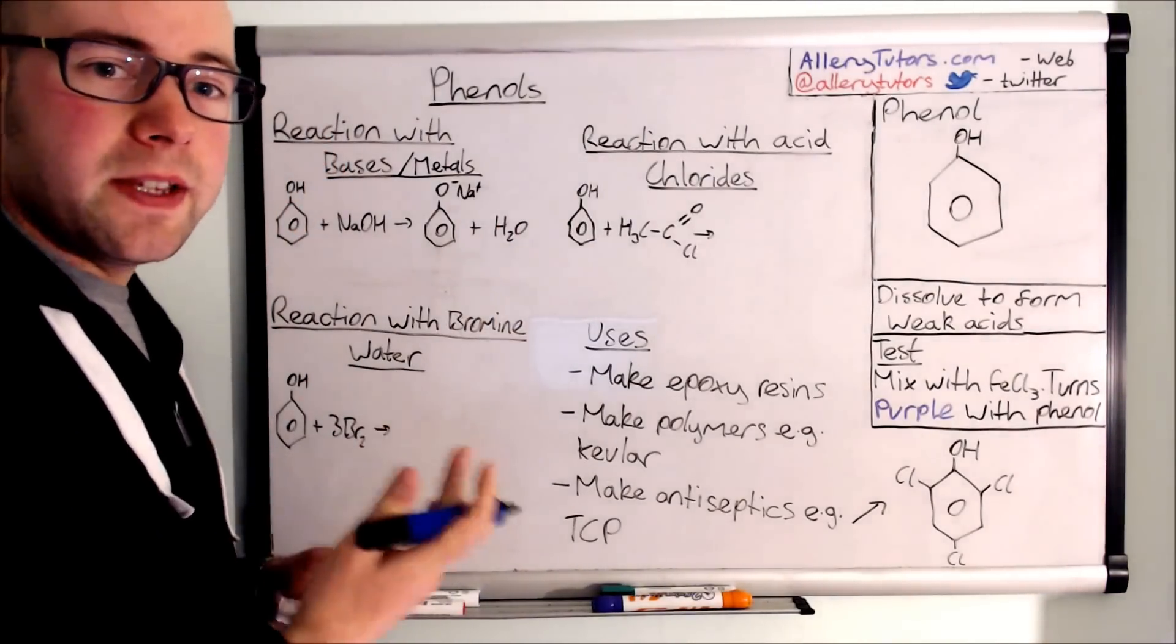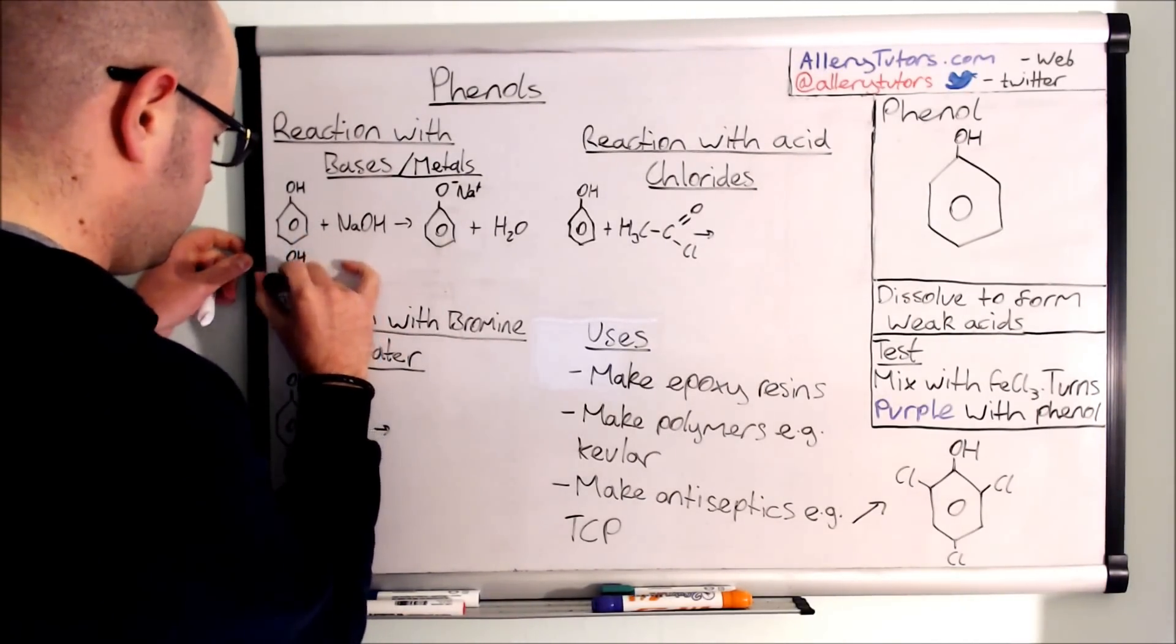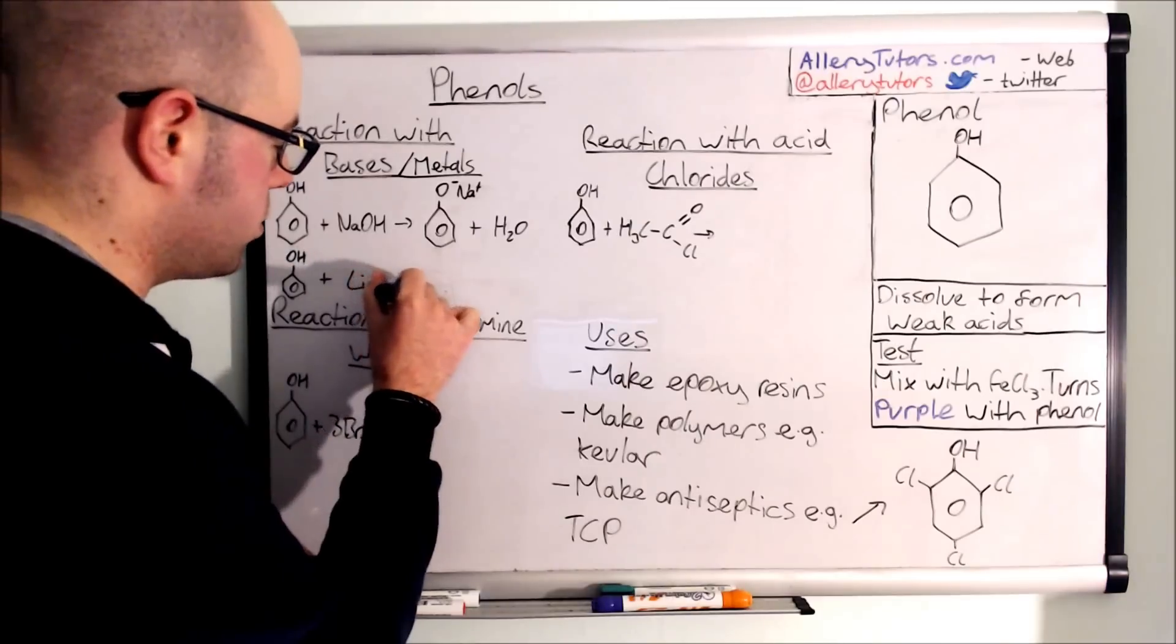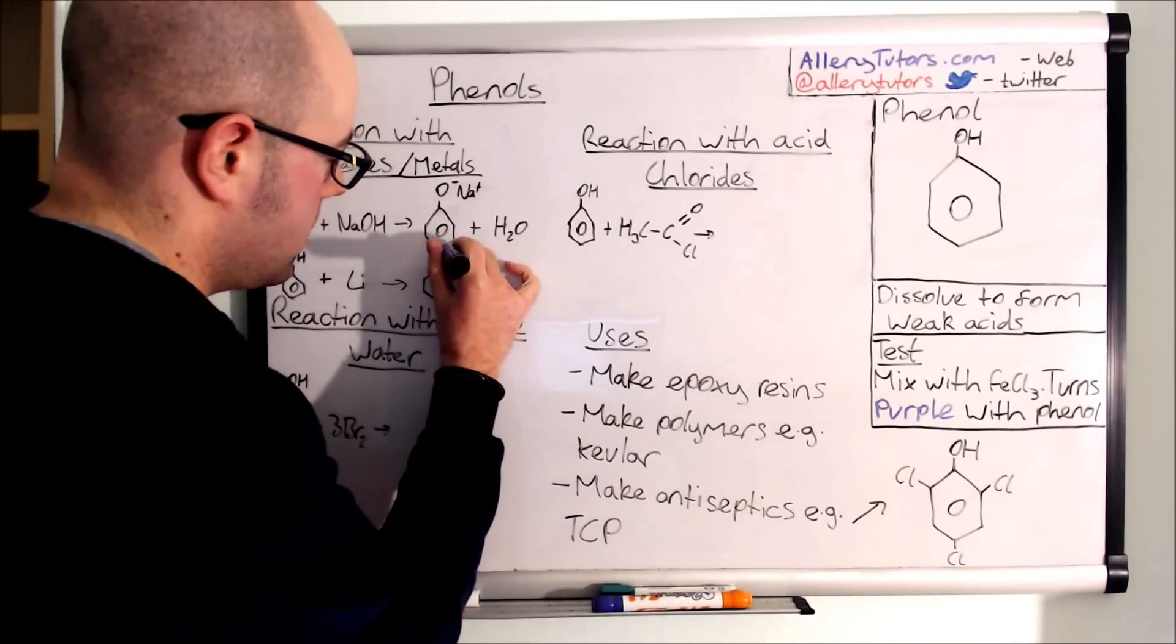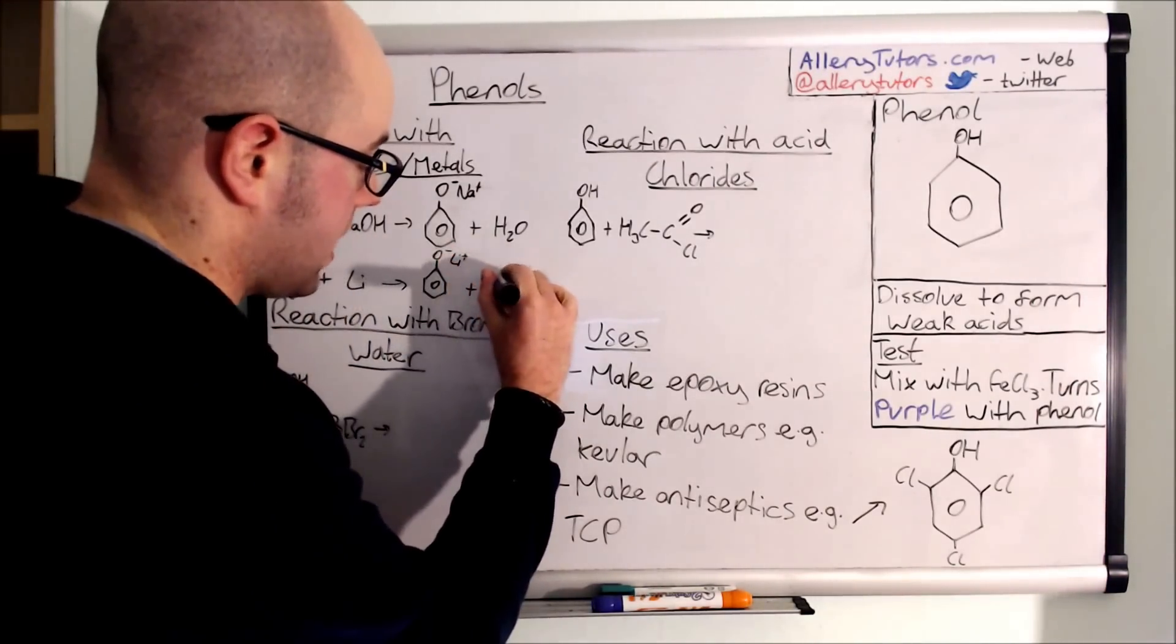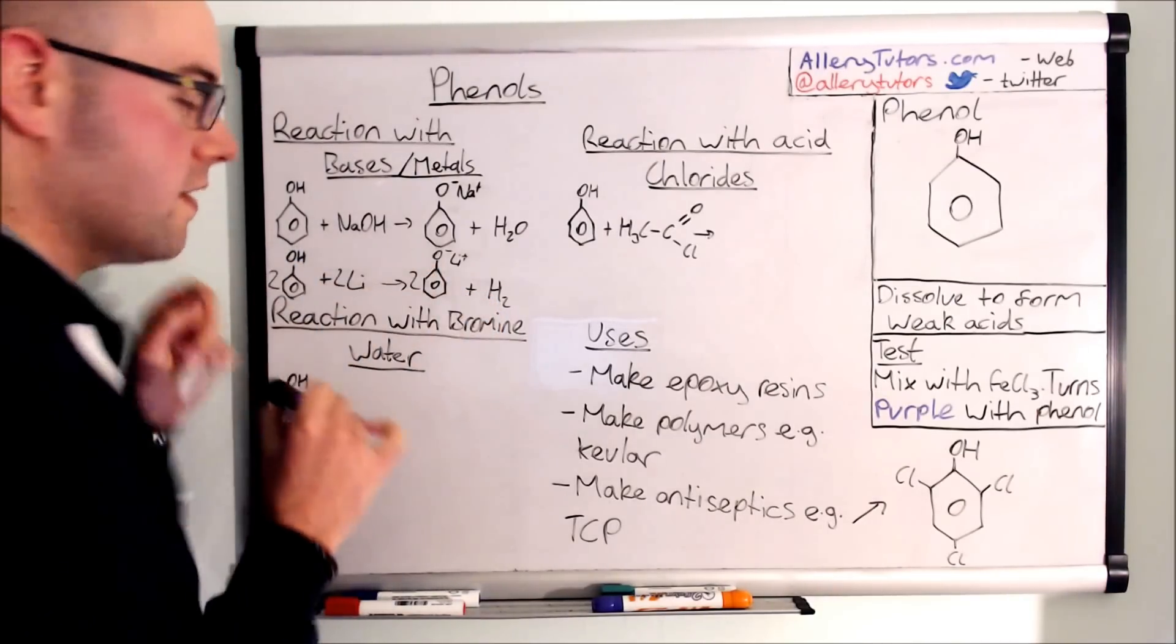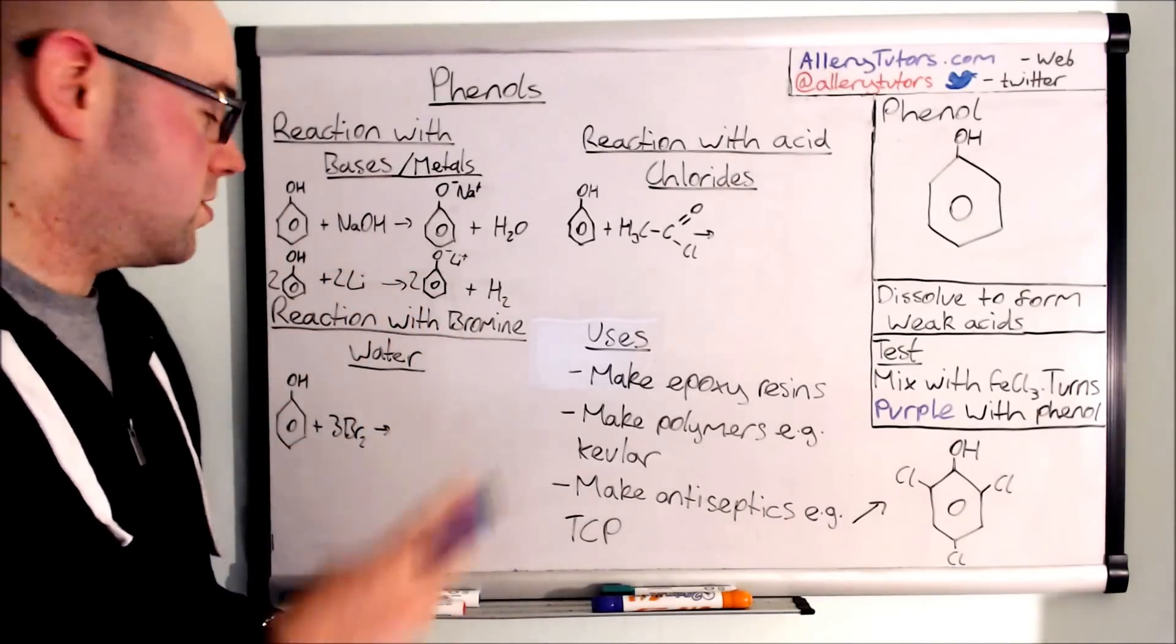The same with metals as well. We can take our phenol and react that with lithium, which is a group one metal that would be reasonably reactive, and we're going to produce our salt. In this case it's going to be lithium phenoxide, and we'll also produce hydrogen gas because acid plus metal gives salt plus hydrogen. Obviously this has to be balanced as well, so we're going to put a two in front of there, a two in front of there, and a two in front of there. Make sure you remember that it's just acid base reactions and acid metal reactions.